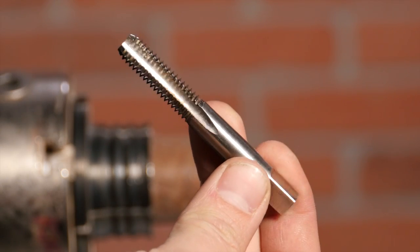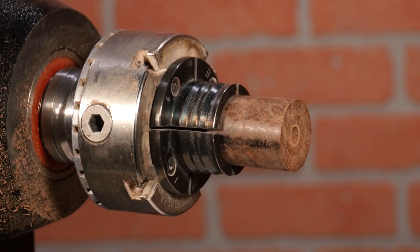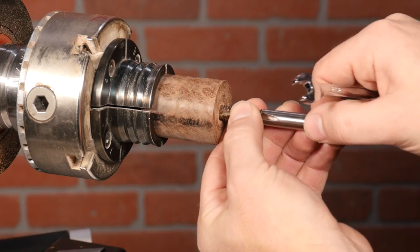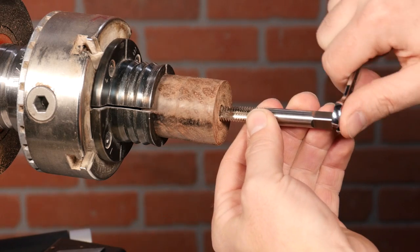Next, we'll tap the threads. I like to leave the blank in the chuck for this. Lock the spindle, then align the tap by eye and thread it in a bit, using a wrench or a tap handle.